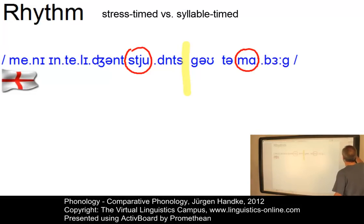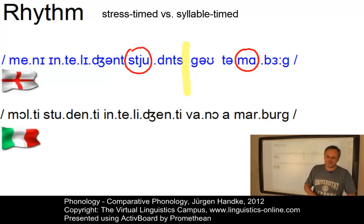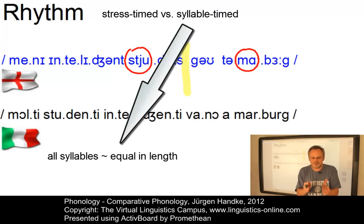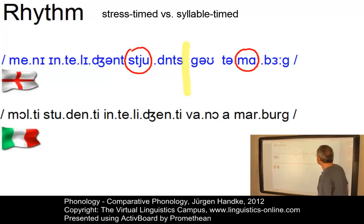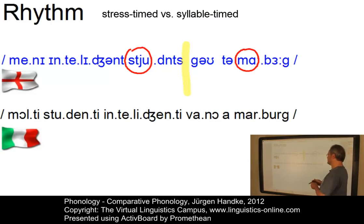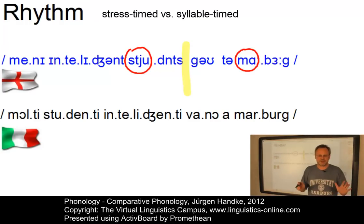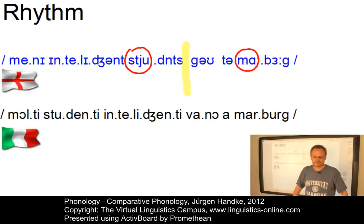This can be contrasted with Italian, which is defined as a syllable-timed language and shows a tendency for every syllable to be heard as lasting approximately the same amount of time at a given rate of speaking. The translation of the English sentence is 'molti studenti intelligenti vanno a Marburg'. We don't say 'molti studenti intelligenti vanno a Marburg' — we really make each syllable equal in length. So Italian is syllable-timed, English is stress-timed.